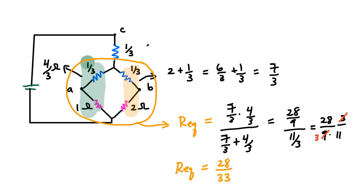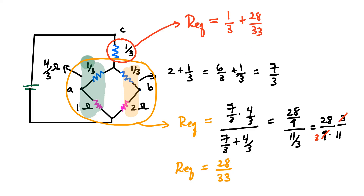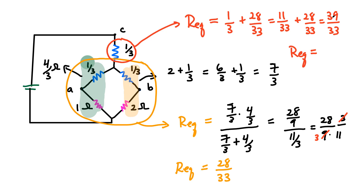We're not quite done — we still need to combine it with the 1/3-ohm resistor R3. So the total equivalent resistance is 1/3 plus 28/33. Converting 1/3 to 11/33, we get 11/33 plus 28/33 = 39/33. Simplifying by dividing by 3, we get R_equivalent = 13/11. That is the same answer I previously got using Kirchhoff's laws for the original bridge network, and it took a lot longer using those techniques.